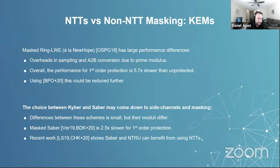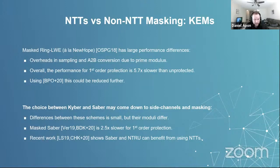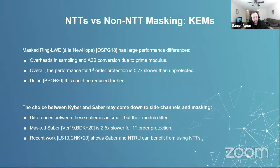The key takeaway here is that the individual pairing choice between Kyber and Saber — not a broad-scale thing, but just between those two — they're so similar that it may ultimately come down to side-channel attacks and masking efficiency and security. In particular, there is a masked version of Saber at first order, but there's not yet a masked version of Kyber. Also, recent work showed that Saber and NTRU, which do not use NTTs, can benefit from embedding their algebra in a higher-order ring and then performing an NTT operation — giving a performance speedup in the reference implementation. However, you then have to specifically consider the cost of side channels.